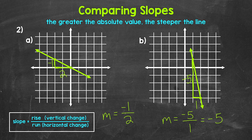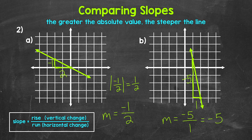Looking at these slopes, negative one half is actually greater than negative five — remember, these are negative numbers we're comparing. So when it comes to negative slopes, we can't just look at which is greater to determine the steeper line. We need to consider the absolute values — which slope is further from zero. The absolute value of negative one half is one half, and the absolute value of negative five is five. Five is the greater absolute value, therefore line B is the steeper line, and we can see that with those lines graphed.